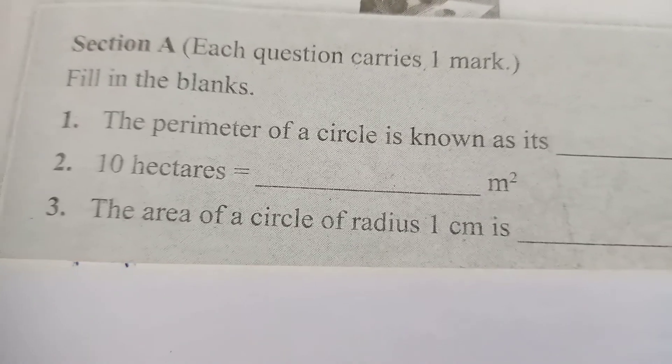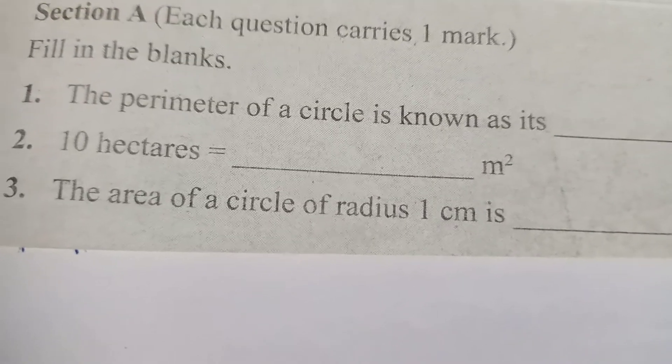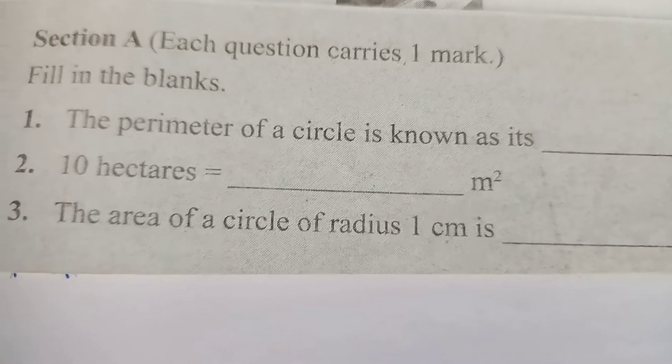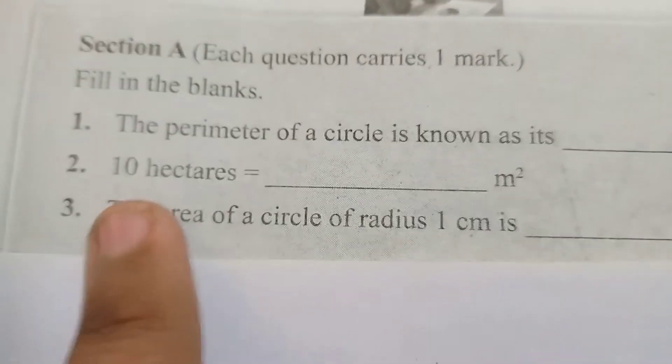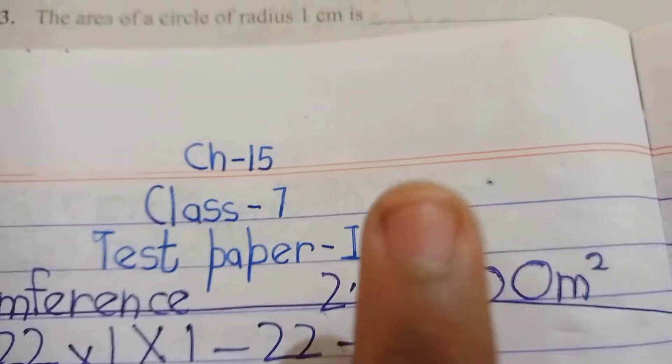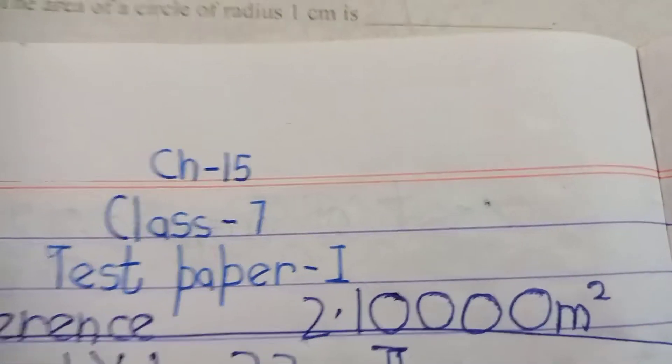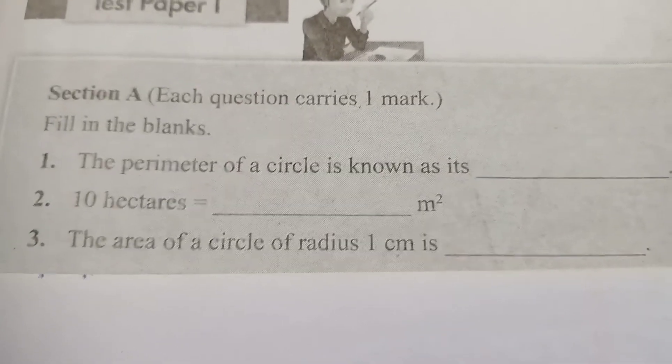For the hectares conversion, you can see a different video — the link is in the description. 10 hectares equals 10,000 meter square. Third question: the area of a circle of radius one centimeter is dash.